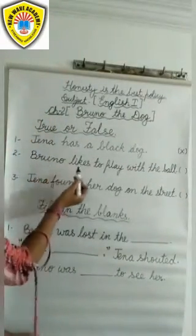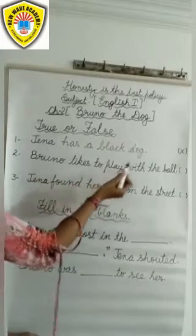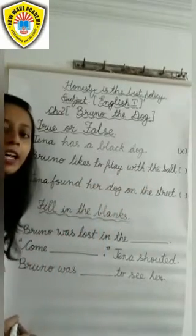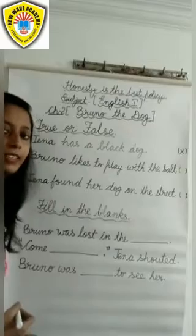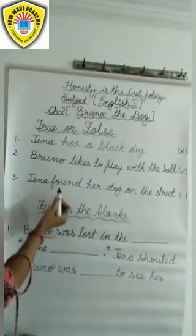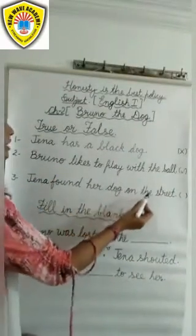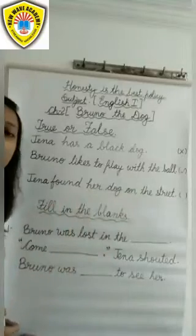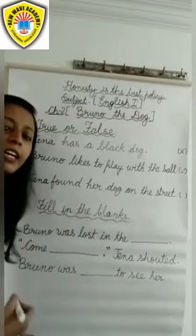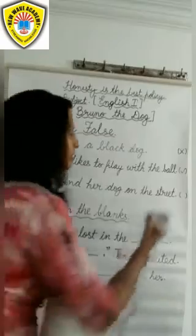Second: Bruno likes to play with the ball. Bruno ko ball se khelna pasand hai. This is true. Third: Jenna found her dog on the street. Jenna ko apna dog street yaani road par mila. This is true.